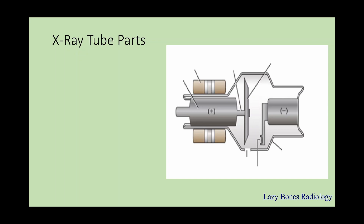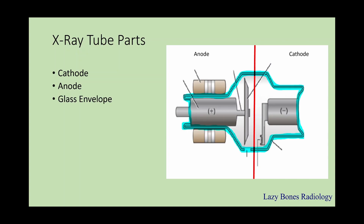Now let's begin with the x-ray tube. As you can see here, this is an image of an x-ray tube. While I was learning how to remember the parts, I used to draw a line in between them. The reason I like to draw a line in between the tube is because I like to separate the two main parts: the cathode, which is the negative side of the x-ray tube, and the anode, which is the positive side. Do not mix these up. Surrounding the cathode and anode is what's known as a glass envelope, which helps structure the x-ray tube and also maintain a vacuum within the tube.